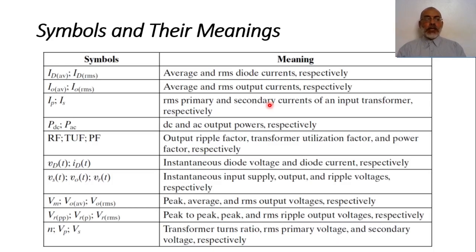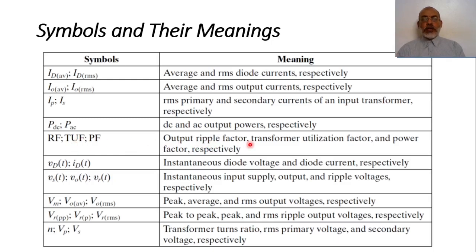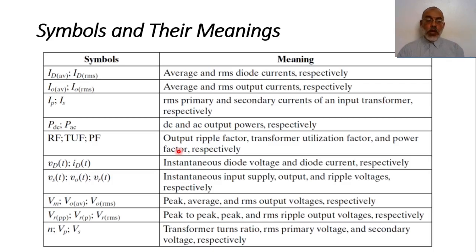PDC and PAC are the DC and AC output powers. RF is called ripple factor, and TUF is transformer utilization factor, and PF is the power factor. We are going to discuss all these factors.